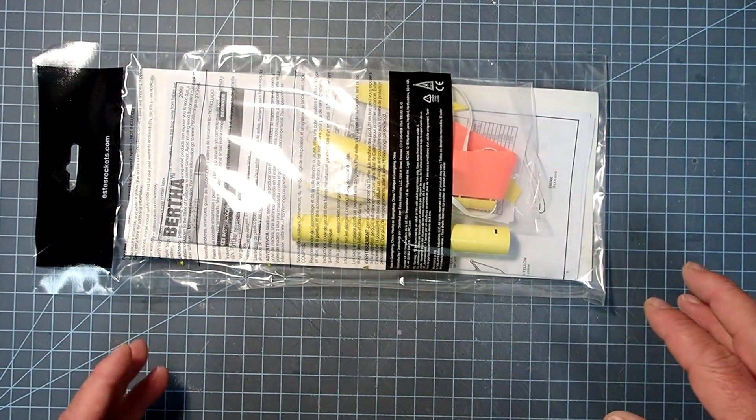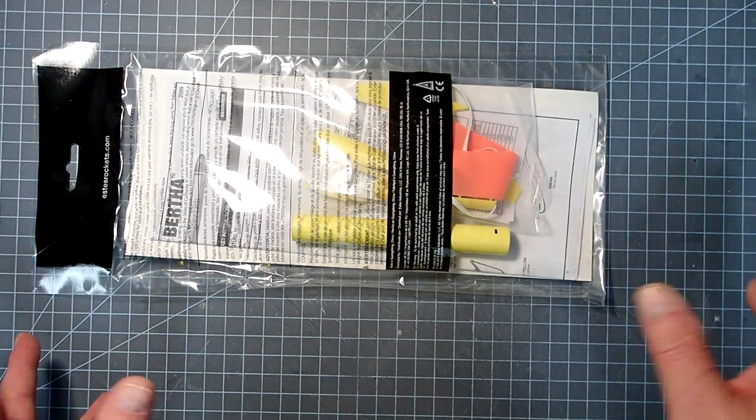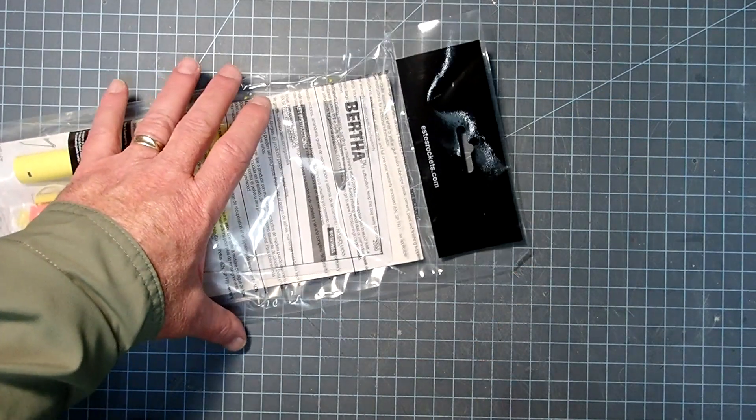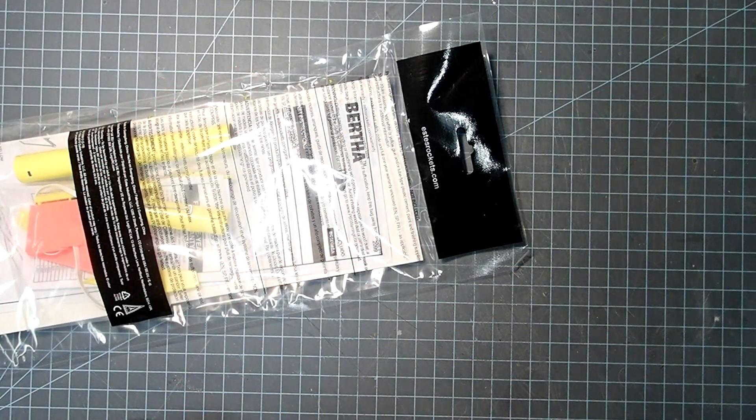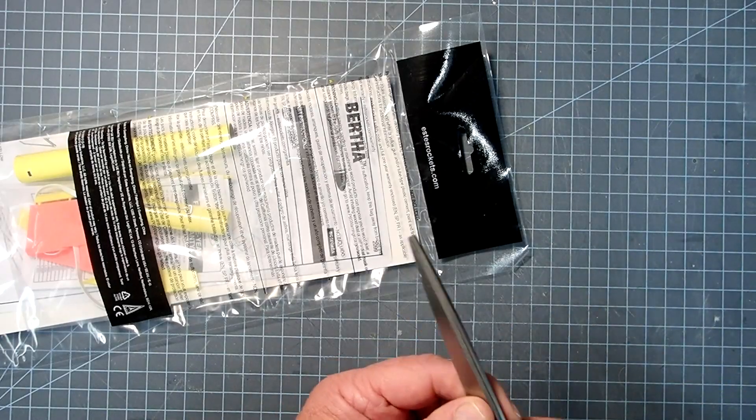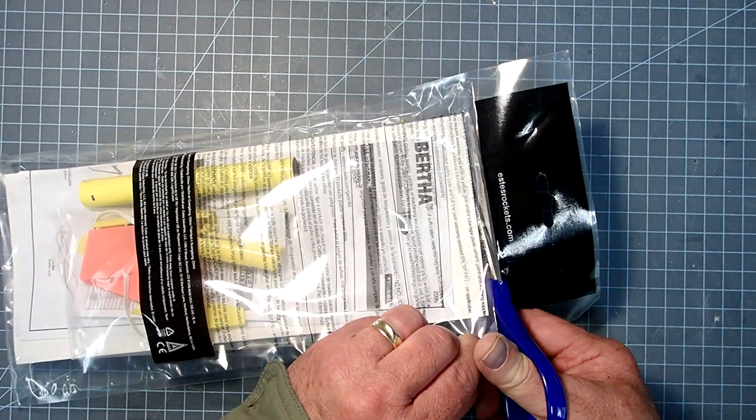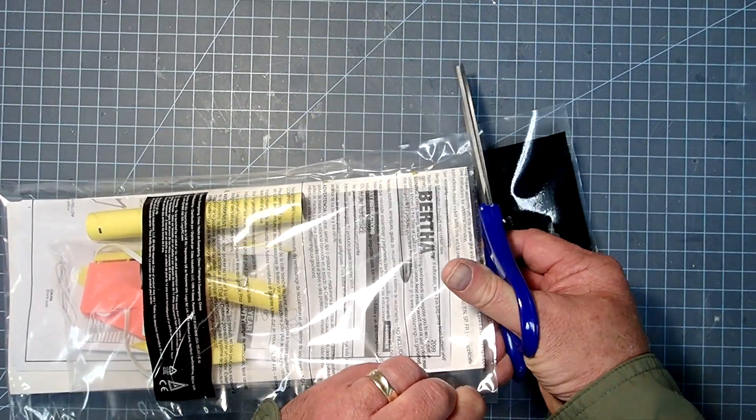The parts are pre-colored, the fins slip into a plastic fin can, so there are no balsa parts like the bigger models have. So if you want to start in on a Bertha rocket, this is an easy one. It's also a good one to do with smaller children.